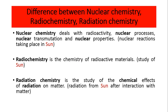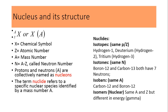Moving to the nucleus and its structure: you can represent a nucleus with the symbol X, or with a real symbol like carbon, uranium, or neon. The symbol X represents any chemical element. Z is the atomic number, A is the atomic mass number, and you can calculate the number of neutrons by subtracting the atomic number from the mass number. This basic information about the nucleus will be used to clarify concepts in the next slides.